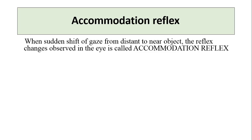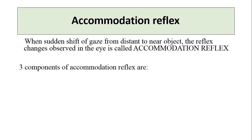During Accommodation, when eyes are focused from a distant object to a near object to achieve clear vision, three changes — or three reactions — occur in the eye. These are the three components of the Accommodation Reflex, known as the three C's. The first is constriction of the pupil, which increases the depth of focus, and is caused by contraction of the sphincter pupillae muscle.